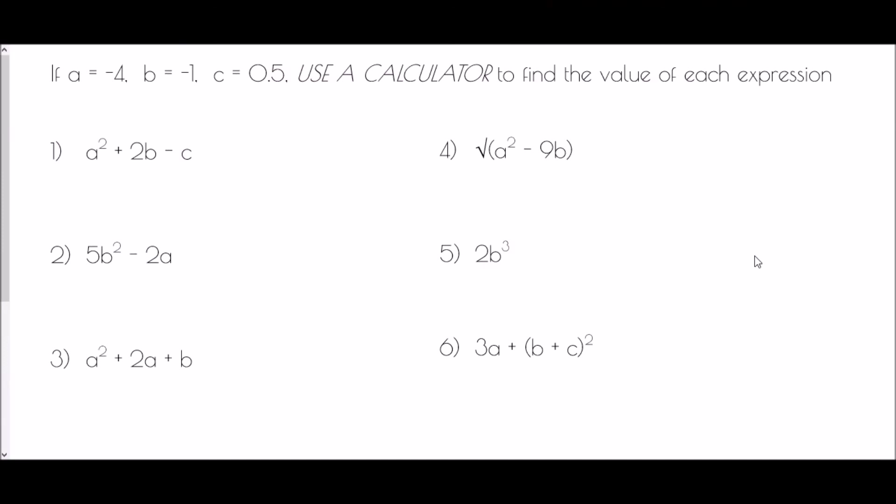In our final set of examples, a equals negative 4, b equals negative 1, and c equals 0.5. Importantly, we're using a calculator. The biggest piece of advice is: anywhere you see a letter, put a bracket around it. No matter what value you've been given for that letter, you can pop it straight inside the bracket and be guaranteed to get the correct answer on your calculator.